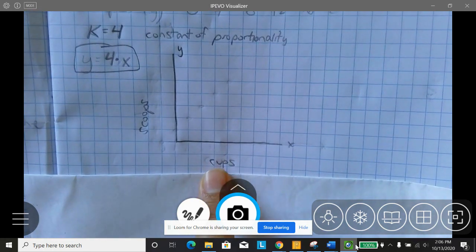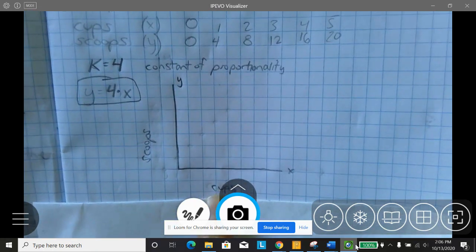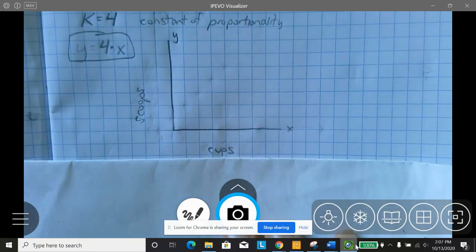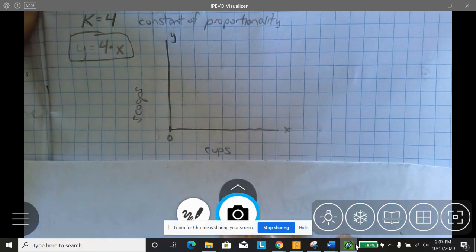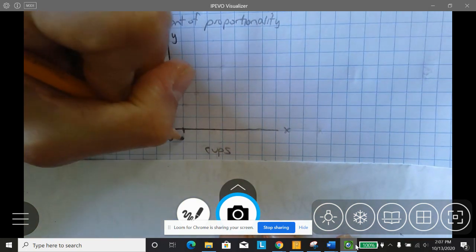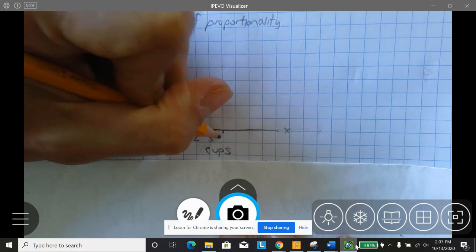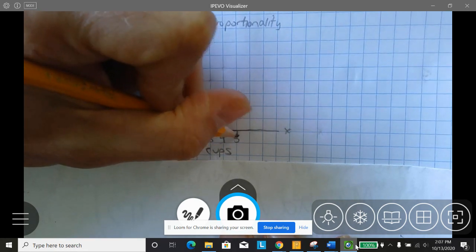Well, for cups, I know that I use zero, one, two, three, four, five. So I'm going to start this very first line at zero. Then this is going to be one cup, two cups, three cups, four cups, five cups.